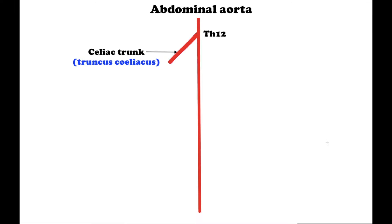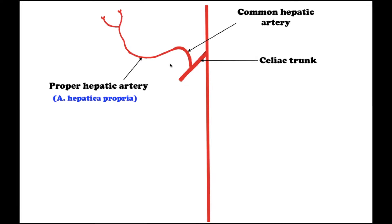The unpaired visceral branches of the aorta include the celiac artery. The celiac artery is a short, thick artery arising at the level of the twelfth thoracic vertebra in the aortic hiatus of the diaphragm. It passes forward above the superior border of the pancreas where it divides into three branches. The first is the common hepatic artery, arteria hepatica communis, which passes along the superior margin of the head of the pancreas to the superior border of the duodenum.